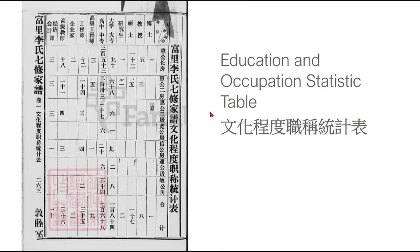Now we're looking at the table of education and occupation statistics. This is really interesting because it allows you, at one simple glance in an easy-to-read table format, to know the occupation, education, and accomplishments in each family.